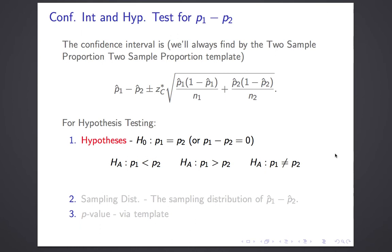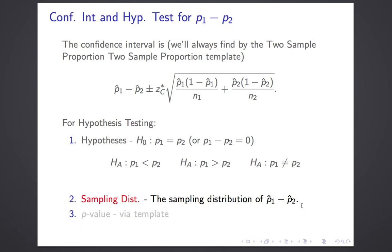Just as in the previous two tests, there are three possible alternate hypotheses: the first proportion can be less than the second, greater than the second, or simply different from the second. The second step is to identify the sampling distribution: P1-hat minus P2-hat, with mean P1 minus P2, following a normal distribution. The standard error goes into the computation of the p-value, which the template will compute for us.